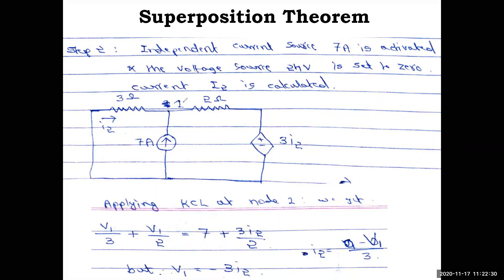Assume node one with voltage v1. Applying KCL at node one — again there are two conventions: current entering the node taken as positive and leaving as minus, or the reverse. Either convention gives the same answer, just as shown for mesh analysis. No need to be confused; pick one and stay consistent.